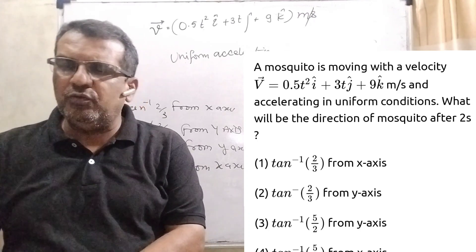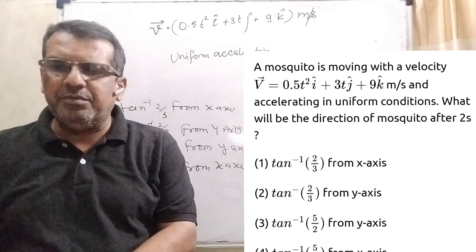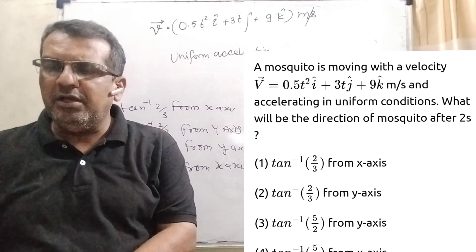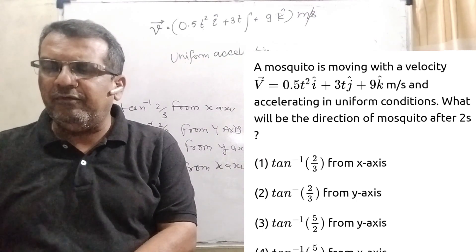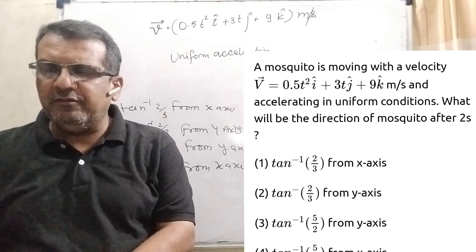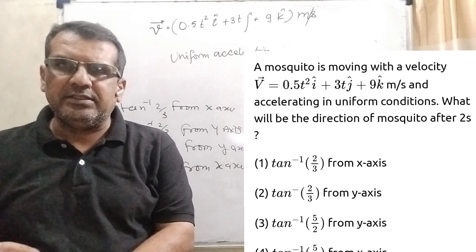Here we have given 4 options. Option A, tan inverse 2 by 3 from x-axis. Option B, tan inverse 2 by 3 from y-axis. Option C, tan inverse 5 by 2 from y-axis. And last D option, tan inverse 5 by 2 from x-axis.